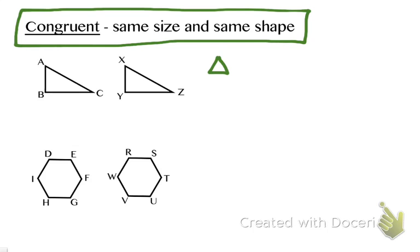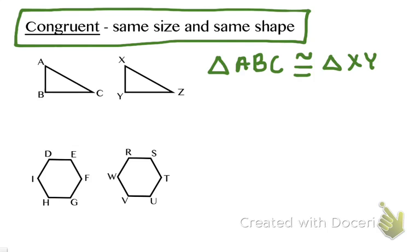We're going to say that triangle ABC is congruent to — and we've got a new symbol to learn here. That's an equal sign with the similarity symbol above it, which means congruent to — triangle XYZ. When naming congruent figures, make sure to put the corresponding angles in the same position of the statement.